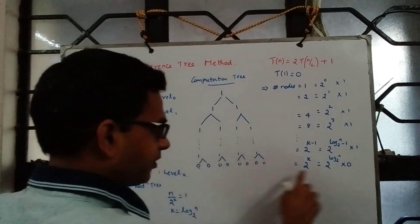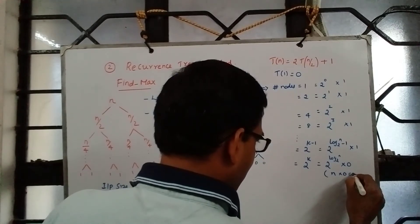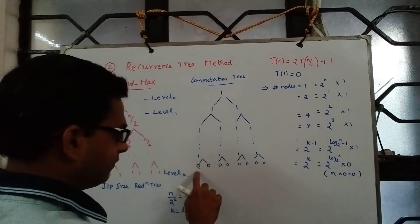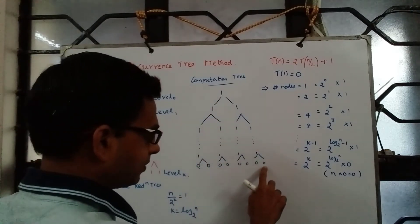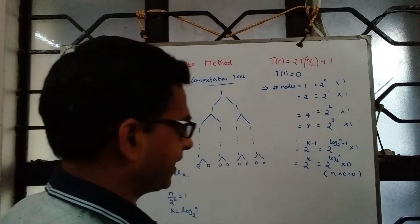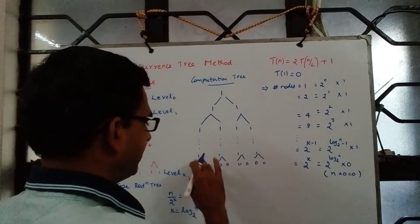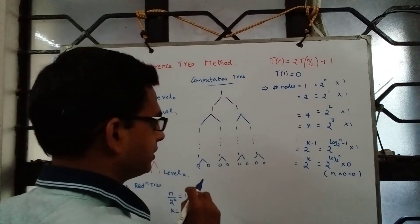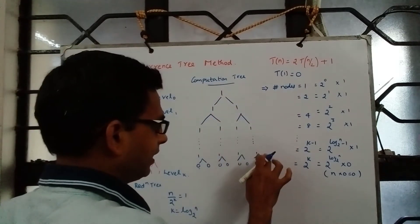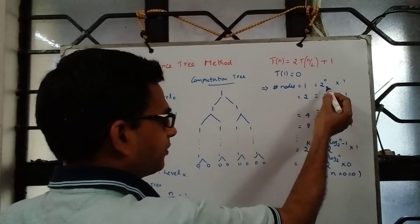2^(log₂n) is precisely n. At the last level we see elements a1, a2, a3, ..., an — all n nodes — but each is already a maximum so there is no cost to return maximum. We incur cost only at all other nodes, so we sum the node counts from the root until the last-but-one level: at the root it is 2^0, at level 1 it is 2^1, and so on.